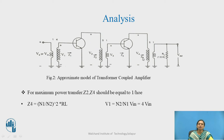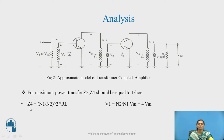Z4 is the load at the collector of the coupling transformer. The equation for the reflected load is Z4 = (N1/N2)² × RL, where RL is the load connected at the output of the coupling transformer or the total transformer coupled amplifier output. With this, you calculate Z4 and then match that Z4 again with 1/HOE.